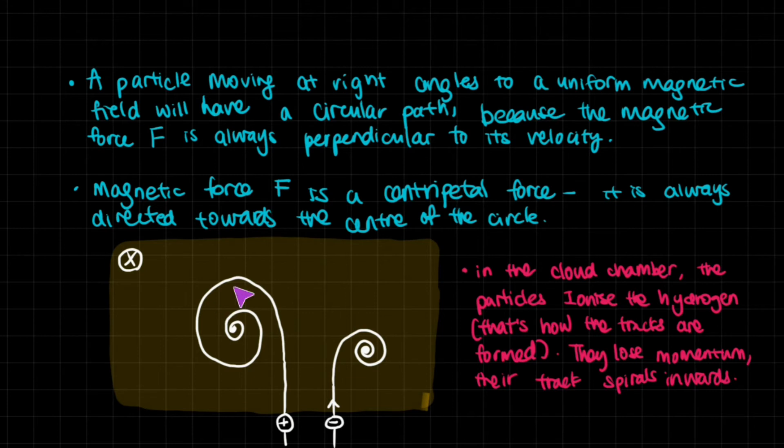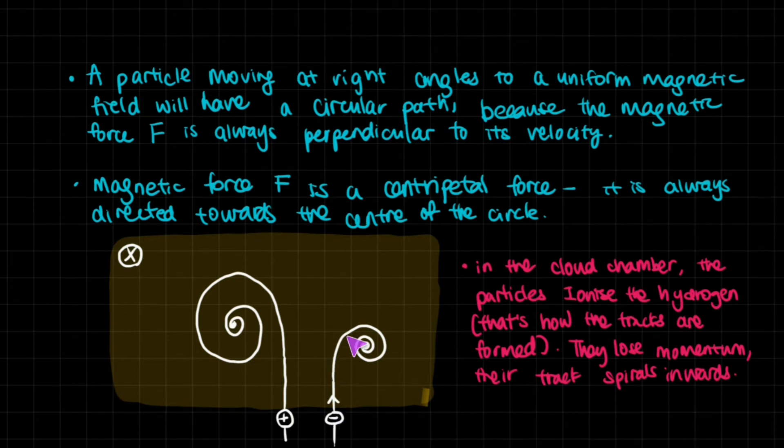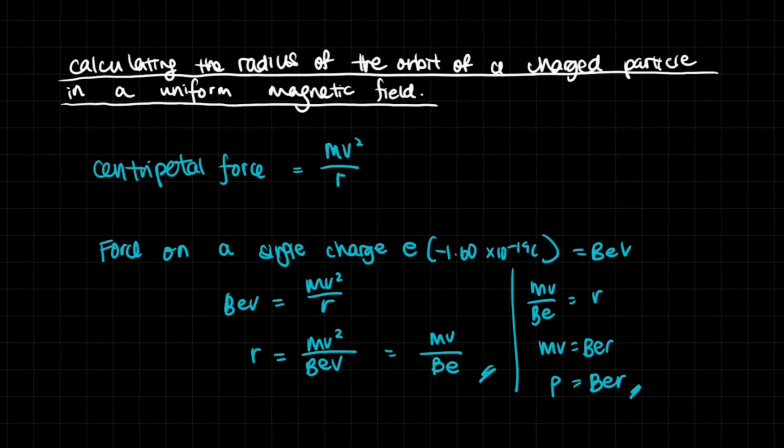This explains why we have these spirals. Now we know particles form circles. How do we explain that they travel in spirals that get smaller and smaller? Theoretically, shouldn't they just curve in a circle and never decrease? Well, we can explain that. In the cloud chamber, the particles ionize the hydrogen. That's how the tracks and bubbles are formed. They lose momentum as they ionize the hydrogen because they collide with hydrogen molecules. Therefore, their track spirals inwards. When they have lower momentum, they have a lower radius.